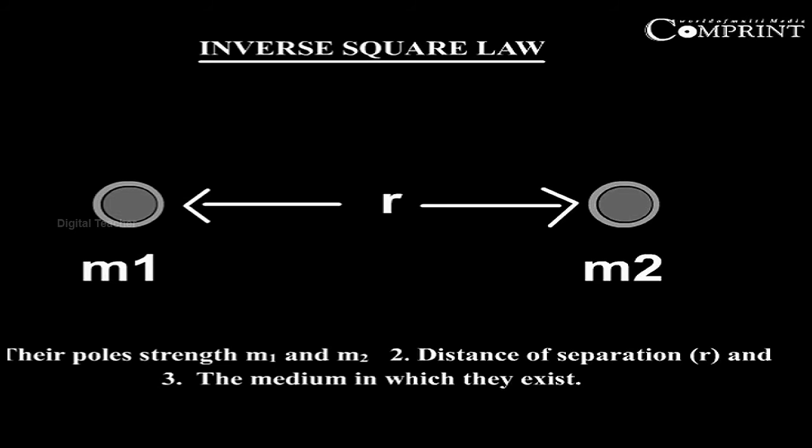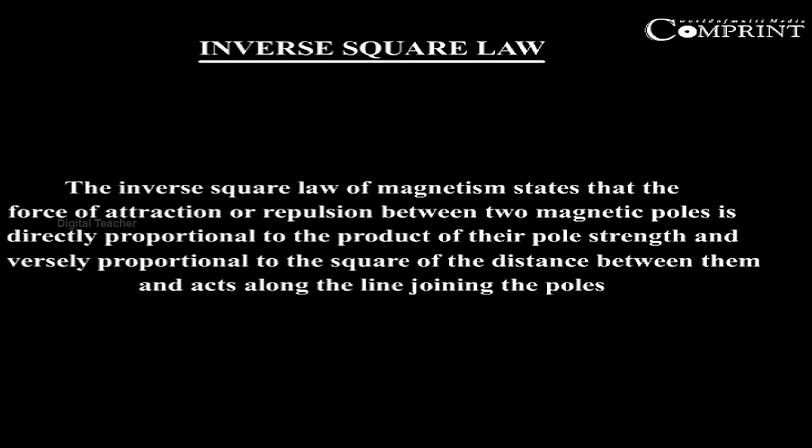and the medium in which they exist. The inverse square law of magnetism states that the force of attraction or repulsion between two magnetic poles is directly proportional to the product of their pole strengths and inversely proportional to the square of the distance between them, and acts along the line joining the poles.